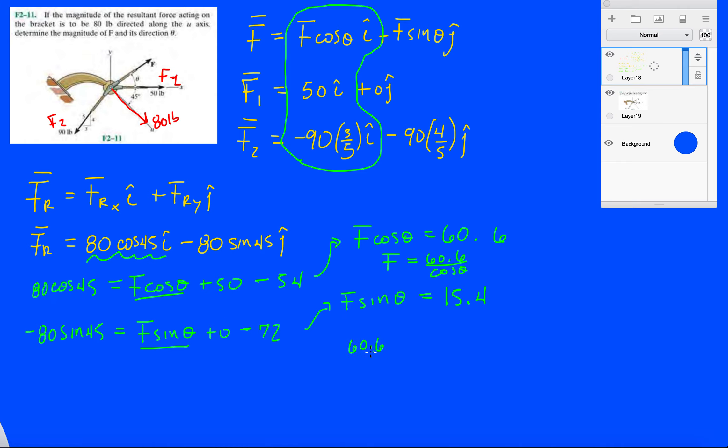So 60.6 over cos theta times sine theta equals 15.4. And then we know that that's going to end up being tan theta equals 15.4 over 60.6. Right? And then we solve for that. So inverse tan, 15.4 divided by 60.6.